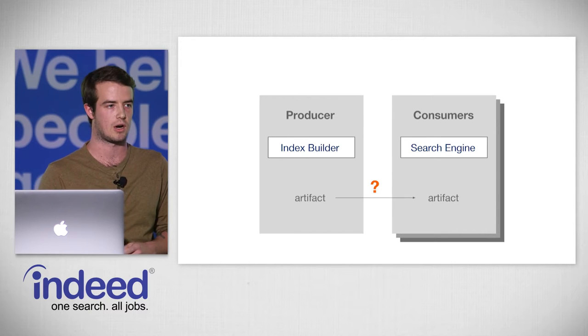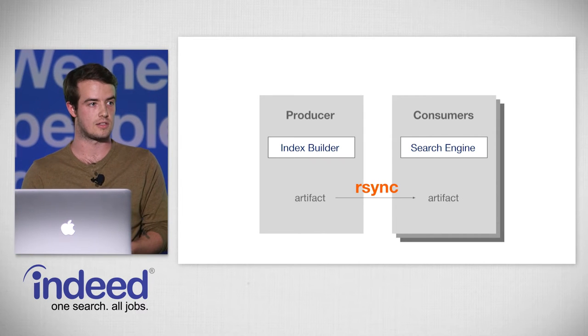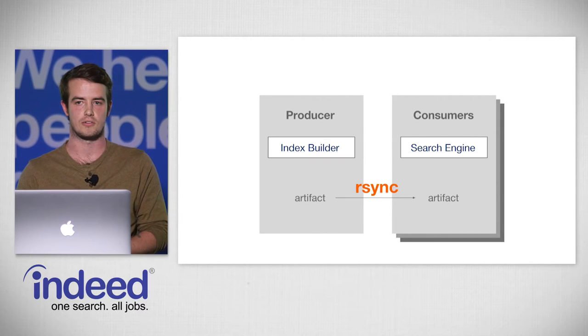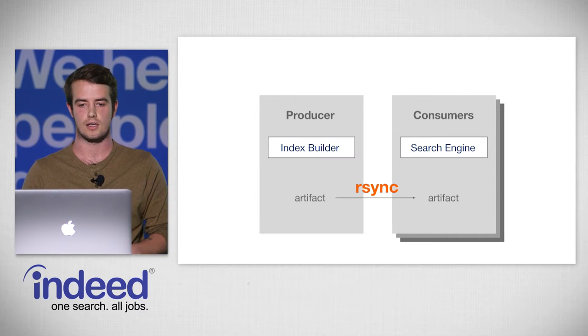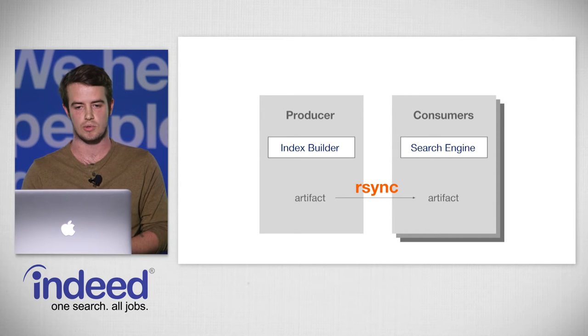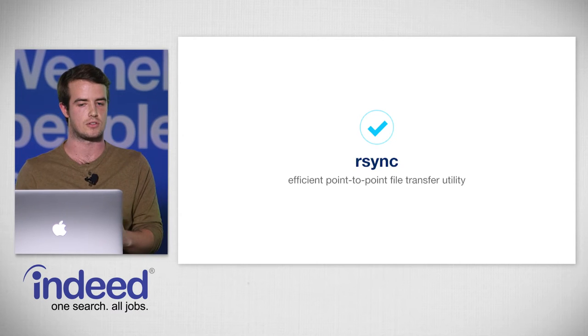We still needed a way to ship data between our producer and consumer machines, and we decided on the simple utility rsync. rsync is an efficient point-to-point file transfer utility that can mirror data between directories on one server and another server, and it only copies the differences between those two directories.